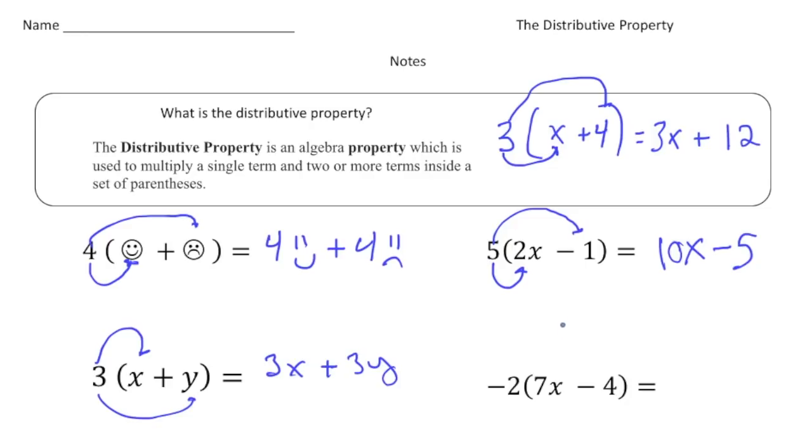You might have learned this thing called add the opposite, where you make this a plus and then make that a negative, right? So if you do five times negative one, there's the negative five right here.